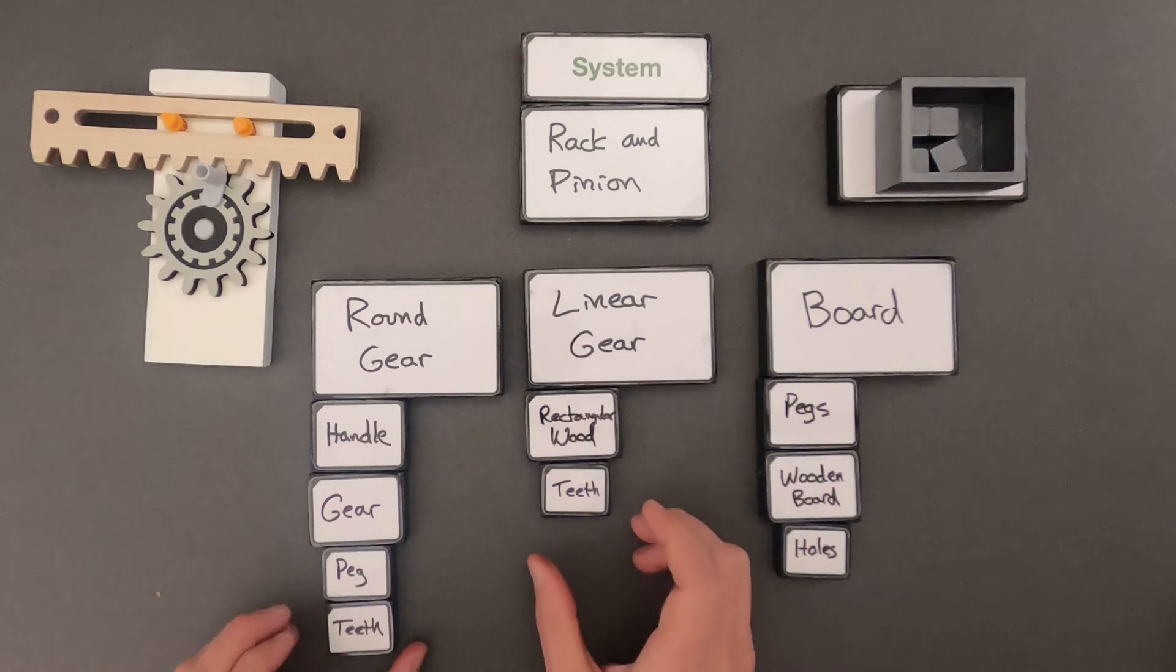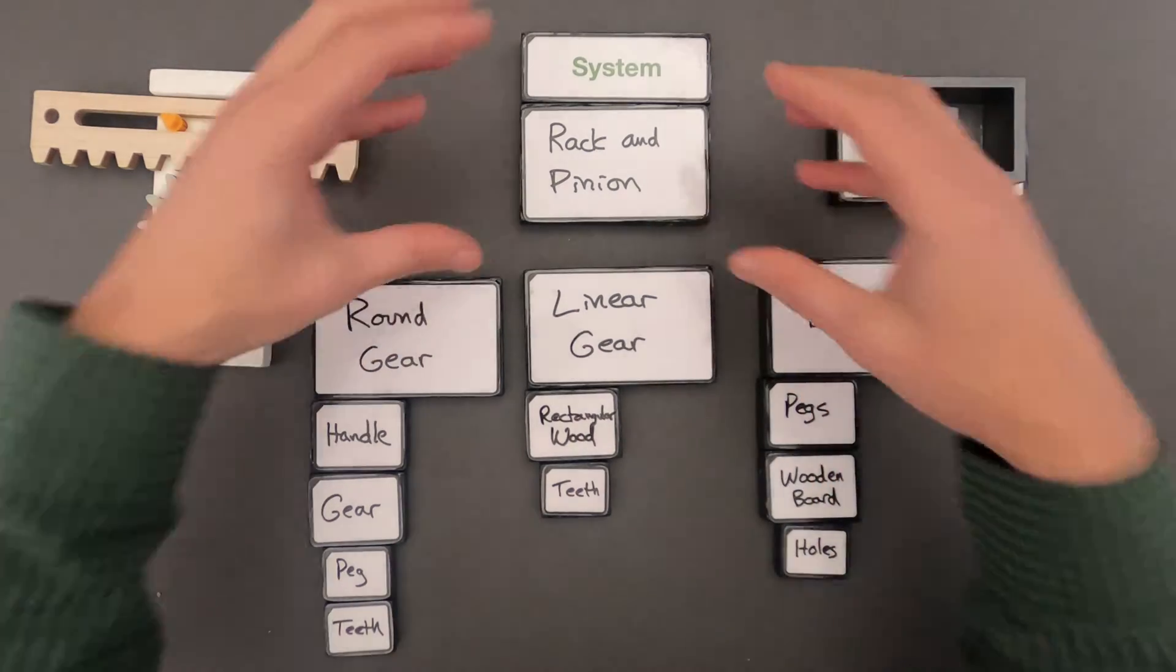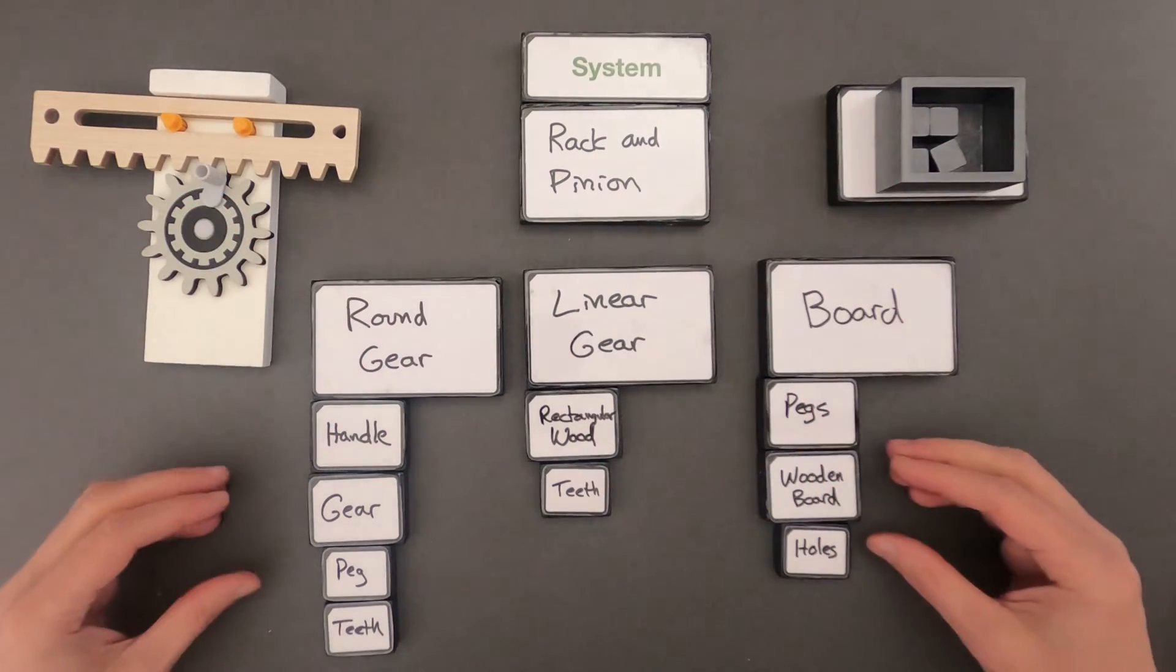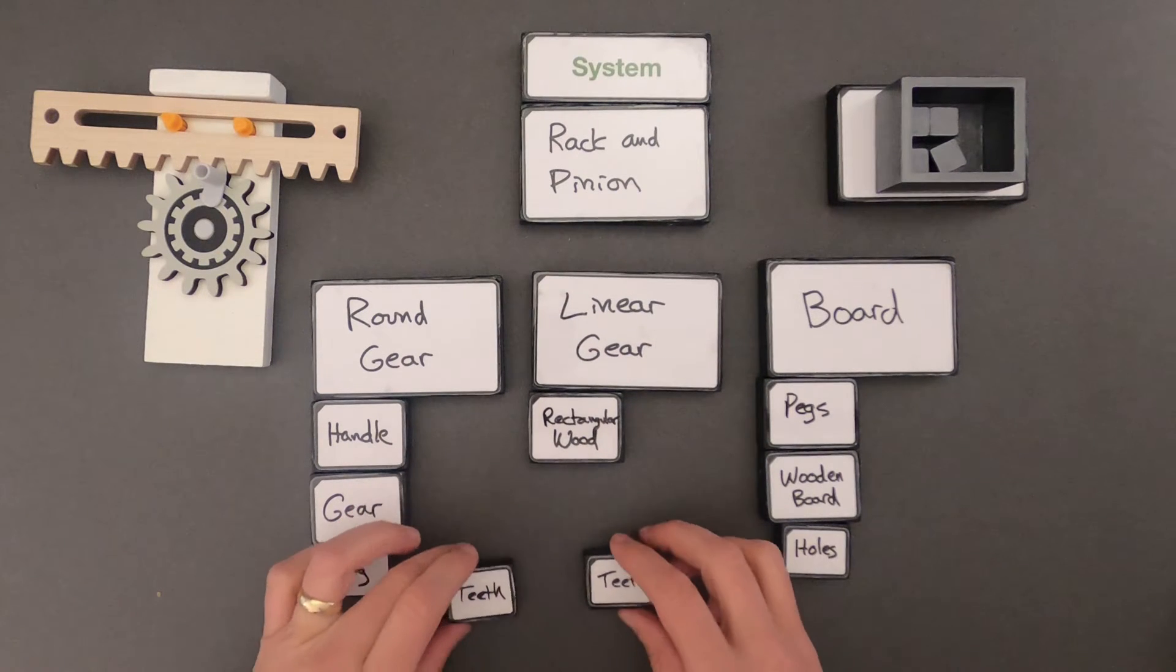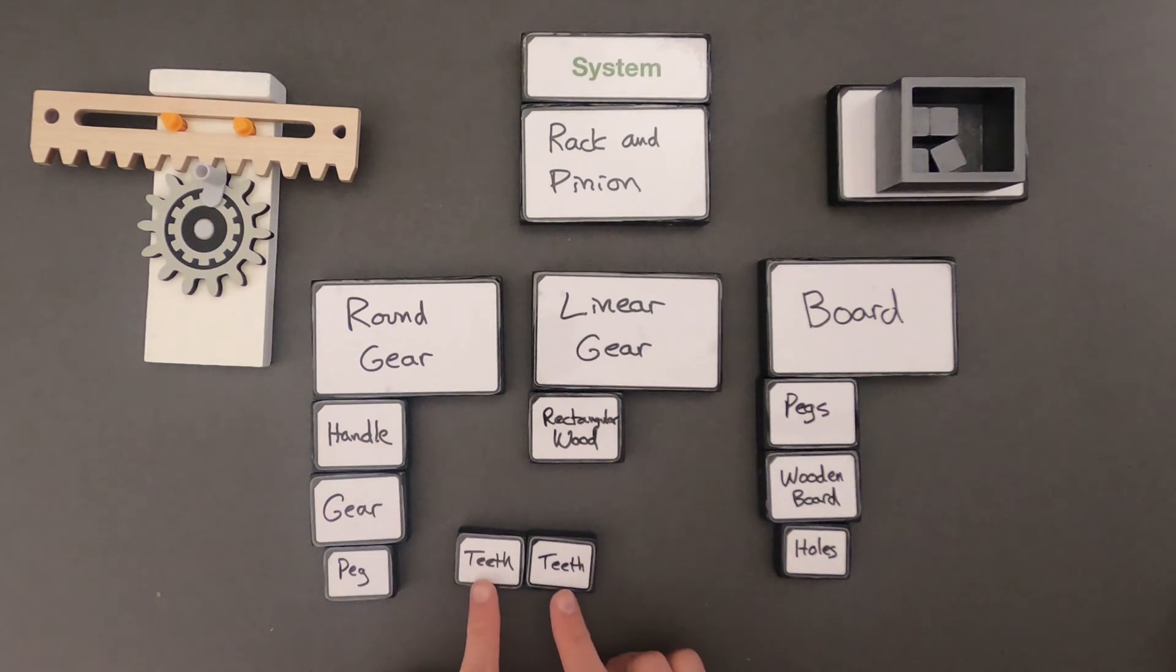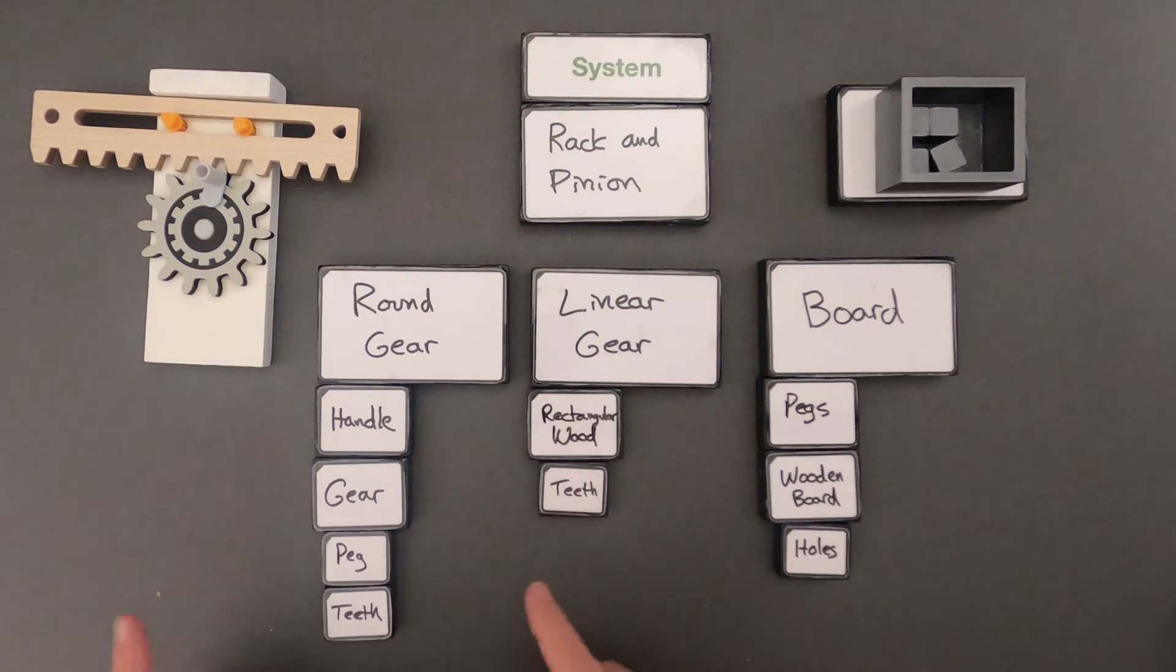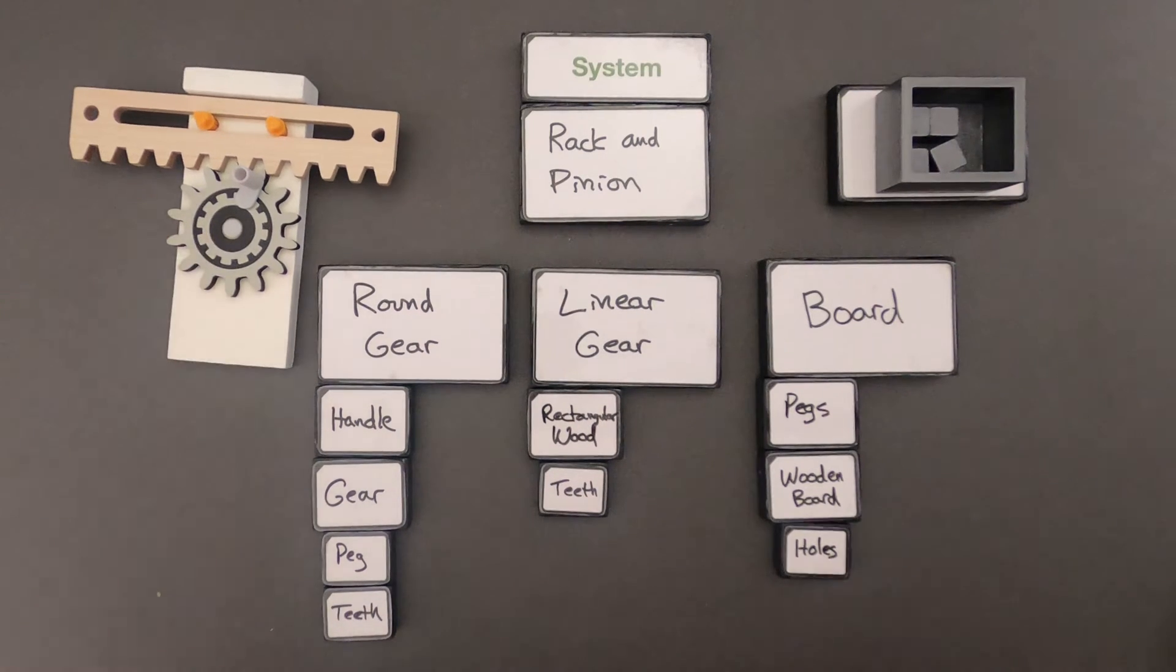And so the nice thing is I can now, that I've got a complex system, systems, and subsystems within that, I can say, well the teeth of the linear gear interact with the teeth of the round gear. So I can show an interaction at different hierarchy. So this is the first simple system. We're breaking a complex system down into systems, subsystems, and subsystems within that.